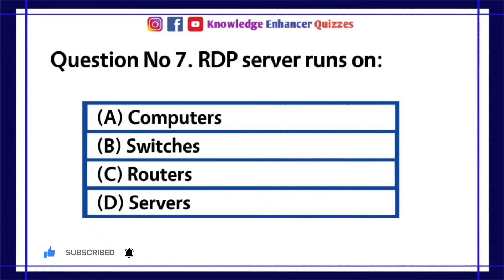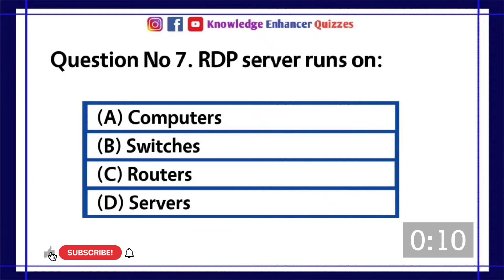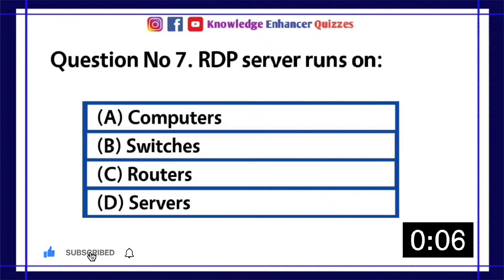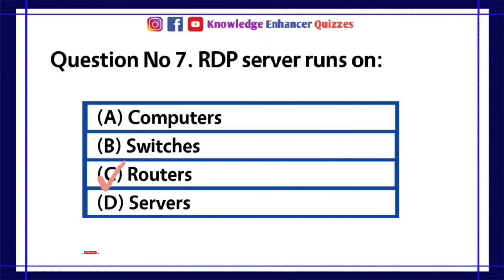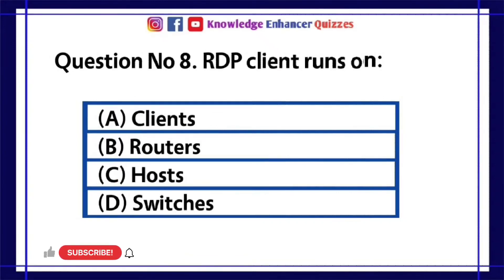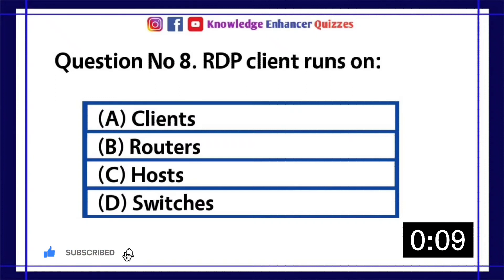Question number 7: RDP server runs on? A. Computers, B. Switches, C. Routers, D. Servers. Option C is the right answer. Question number 8: RDP client runs on? A. Clients, B. Routers, C. Hosts, D. Switches.